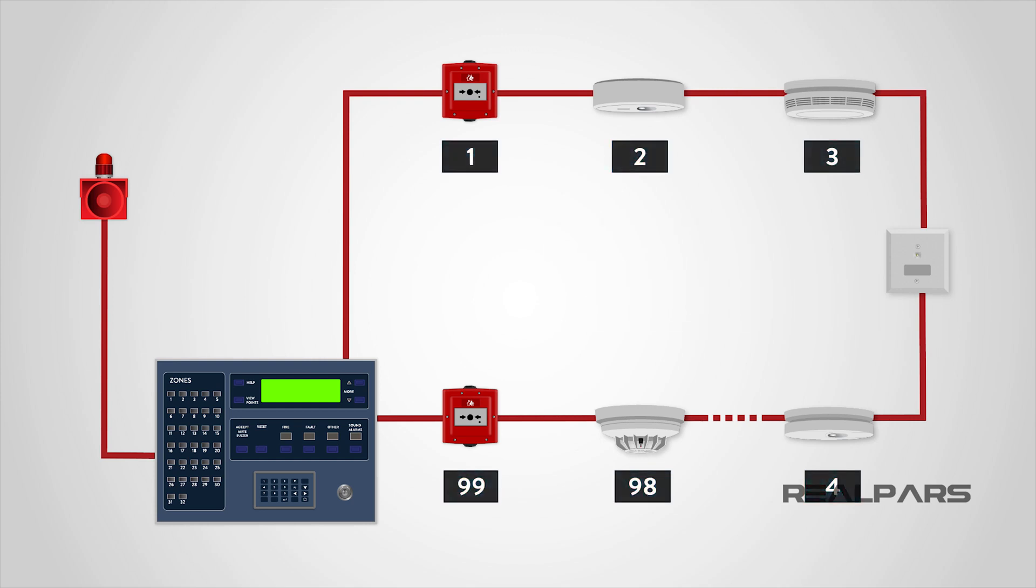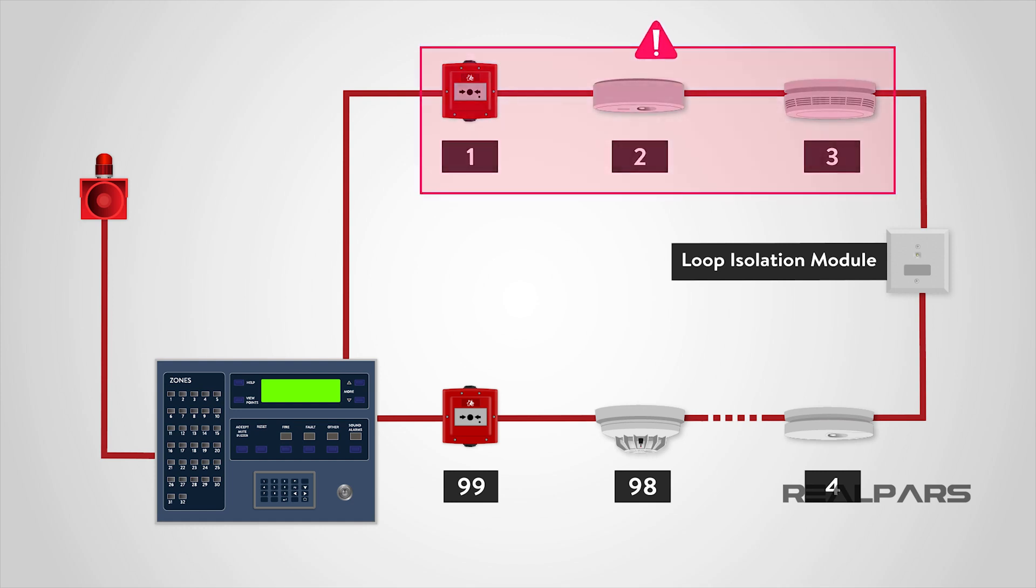It is common for the loop to be fitted with loop isolation modules, so that the loop is sectioned in order to ensure that a short circuit or single fault will only cause the loss of a small part of the system, allowing the rest of the system to function normally.